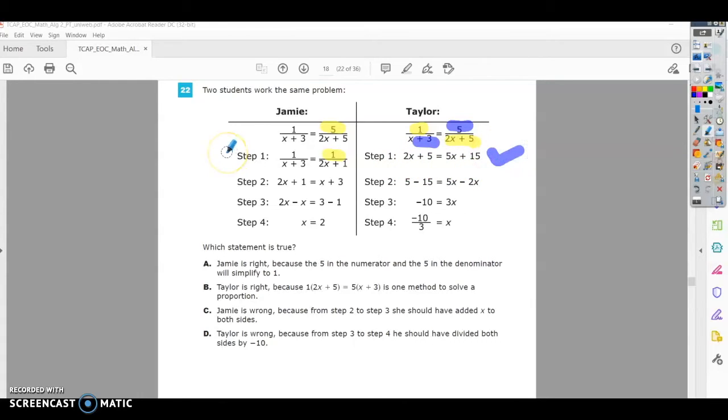On Jamie's side, they didn't rewrite the problem or anything. All they did was change a number, which you cannot do.